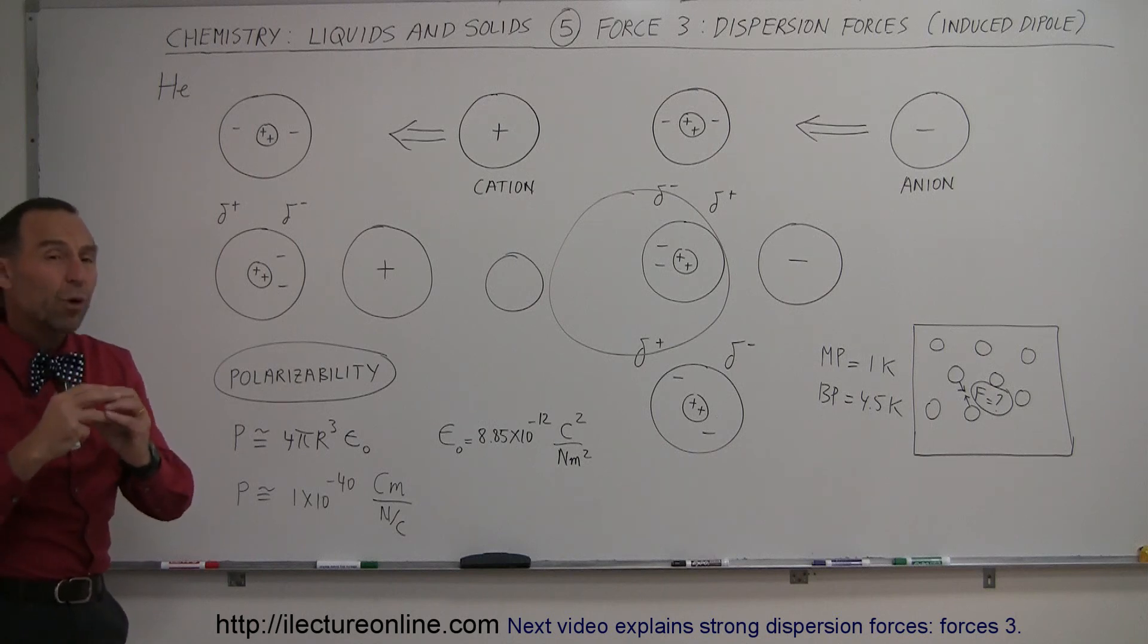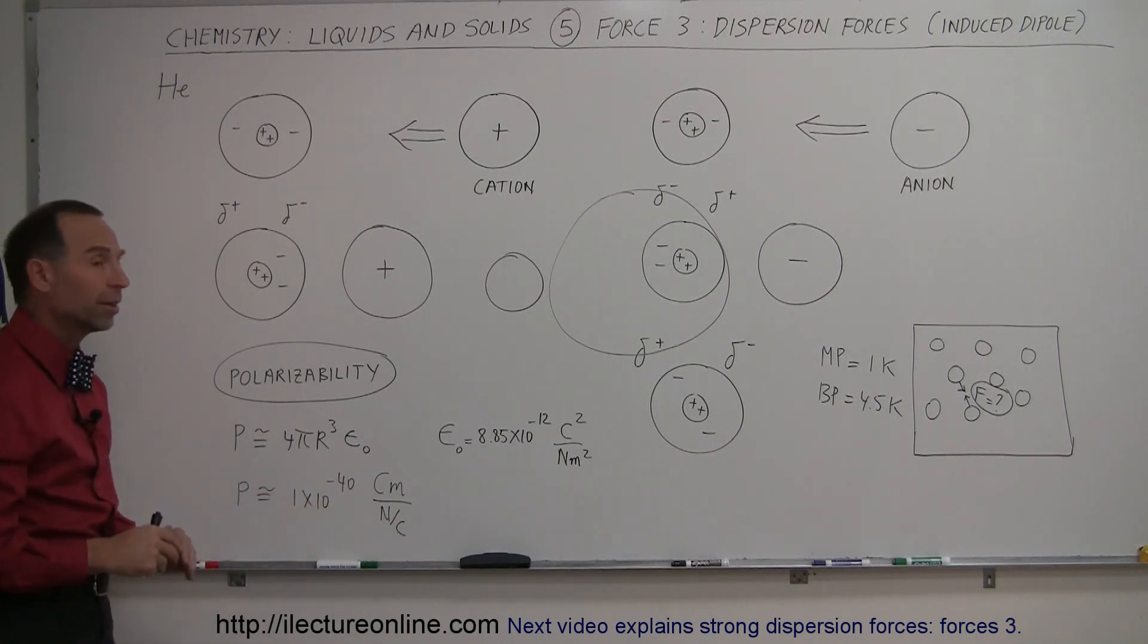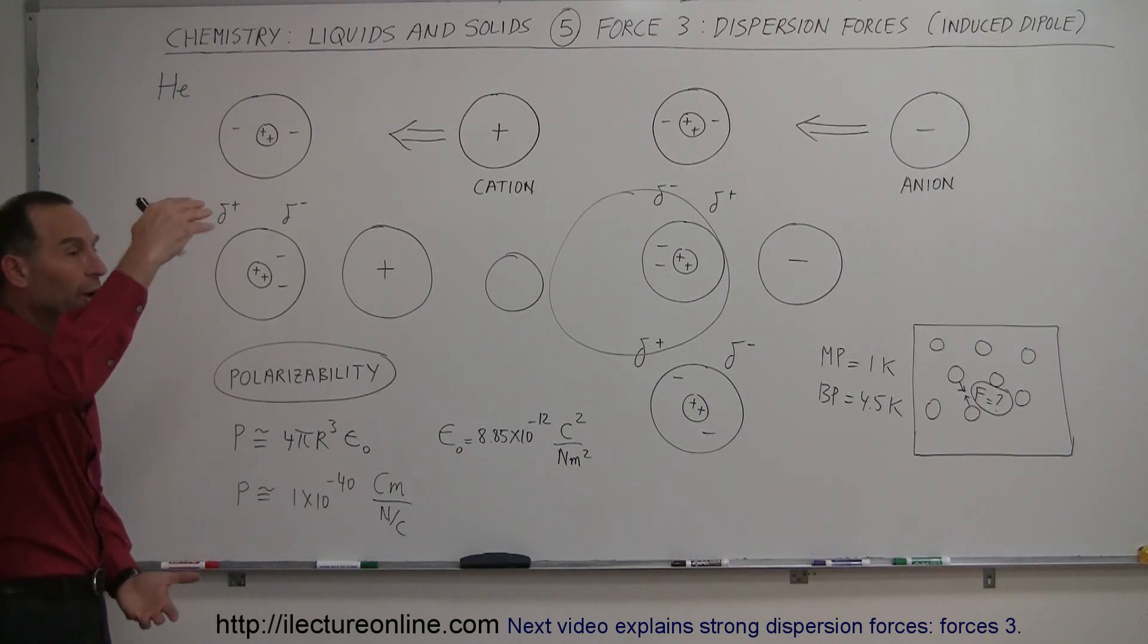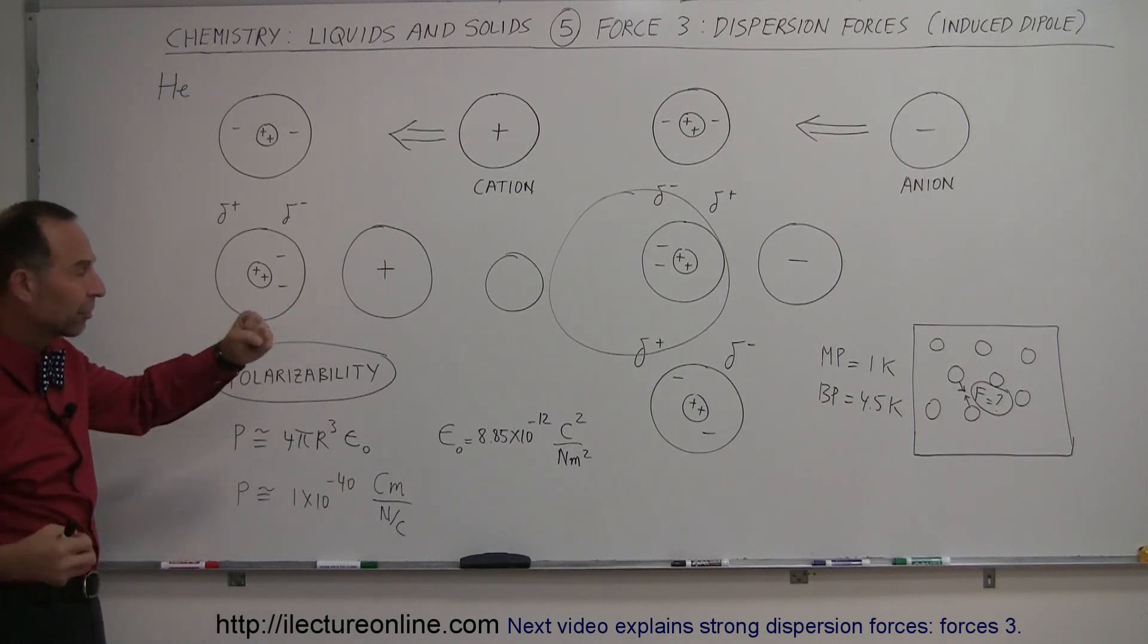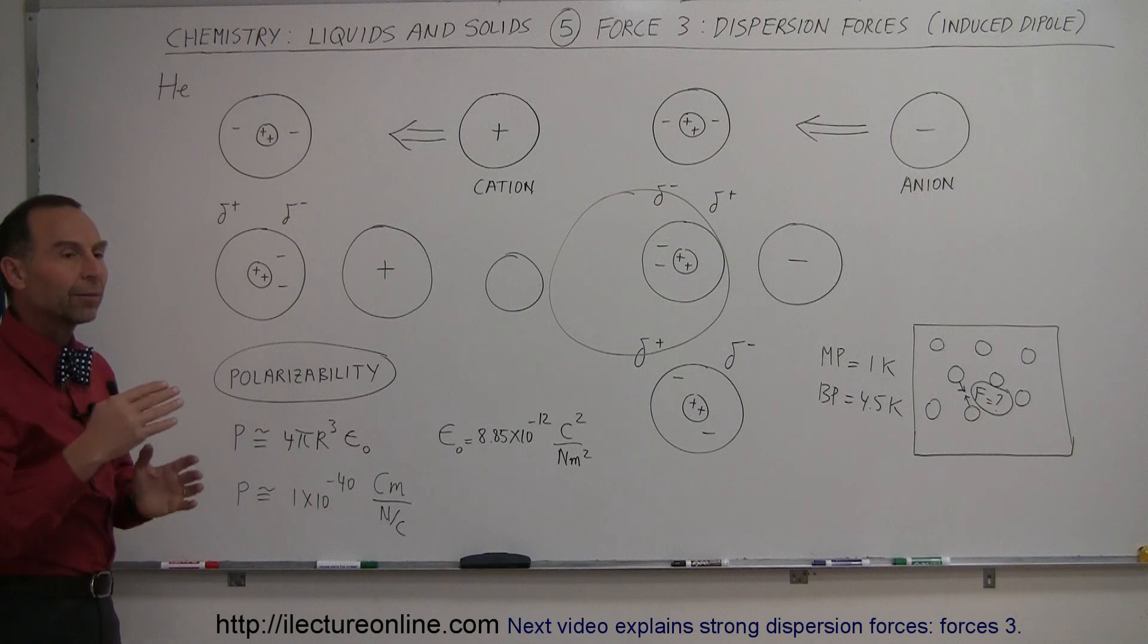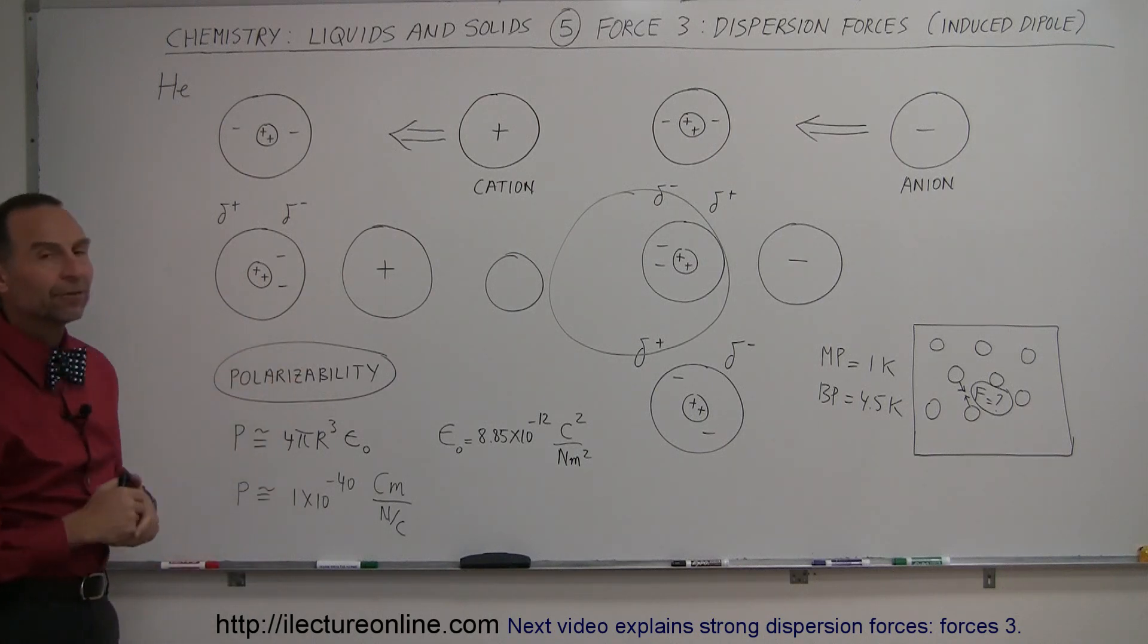Helium will have a very small polarizability, much smaller than this. Larger molecules will have a much greater polarizability because they're larger, and the charges, the electrons can be moved around much more so or being pushed around a lot more so by the presence of ions.